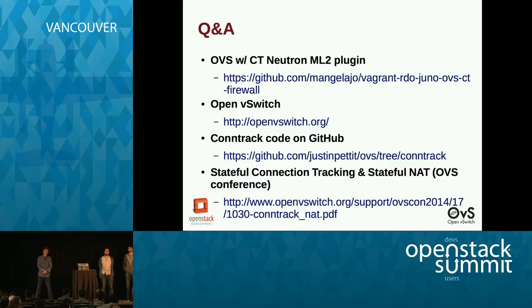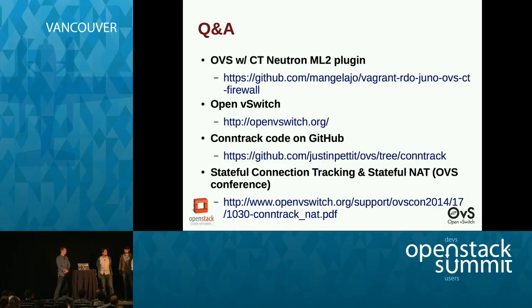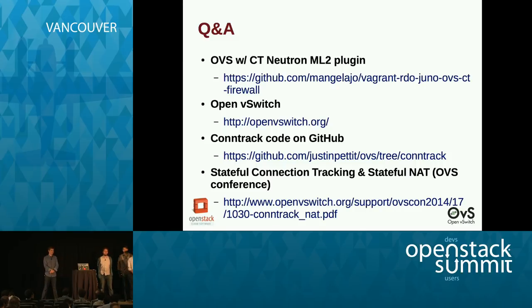Question: will the upstream kernel work be available as a kernel module for what we deploy today — CentOS 7.0 — or will we have to install custom kernels? Same as any new kernel feature: you need a backport into your distribution kernel. But given the attention being paid to this feature, all the distributions will likely be happy to backport it and make it available in their distribution kernel.